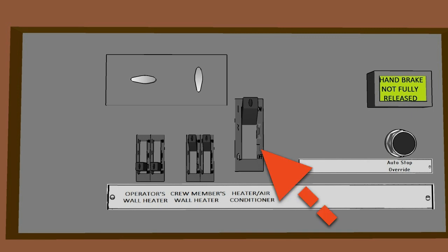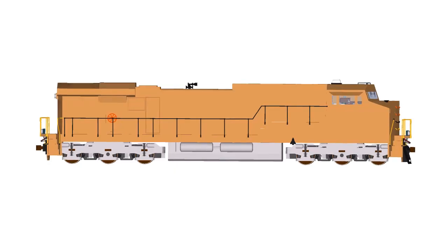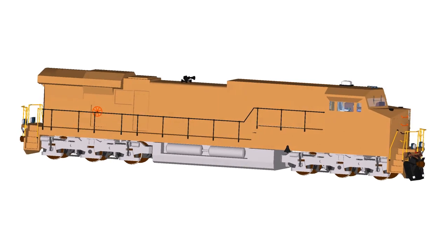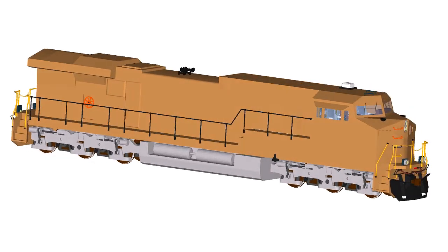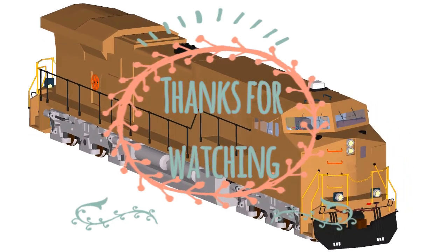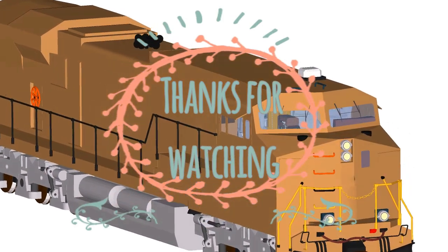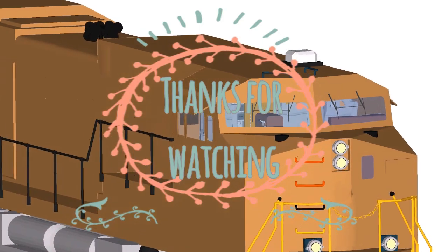Air Conditioner/Heater Circuit Breaker: this circuit breaker controls power to the cab air conditioner heater unit. Strip Heater Circuit Breakers and Output Controls.